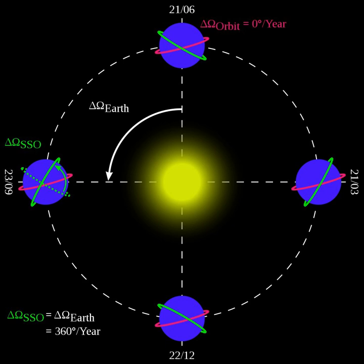A sun-synchronous orbit can place a satellite in constant sunlight, which allows the solar panels to work continually.